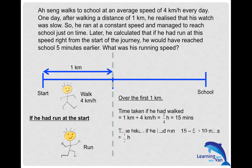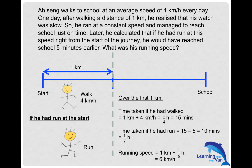So the time taken to run the first one kilometer would be ten minutes, or one sixth of an hour. Since we need to find the running speed in kilometers per hour, we convert everything into hours. Applying the formula again: speed equals distance divided by time. That gives us the running speed — as simple as that. You just need to know that. It may not be obvious at first, but take time to ponder and you'll get it.